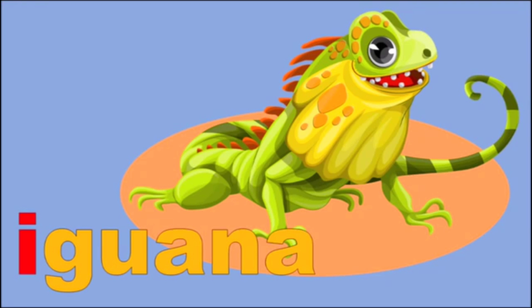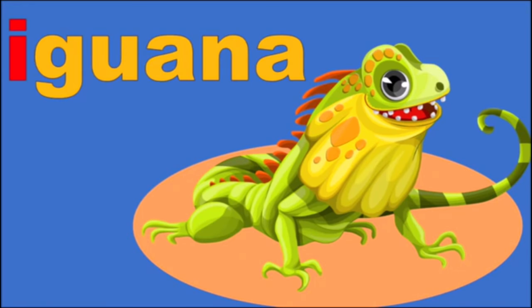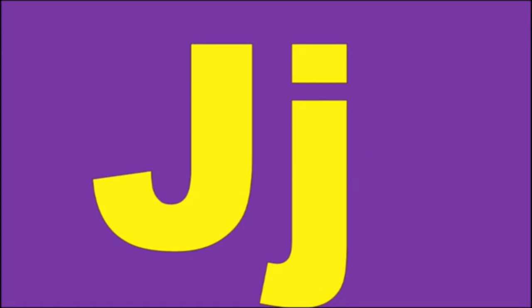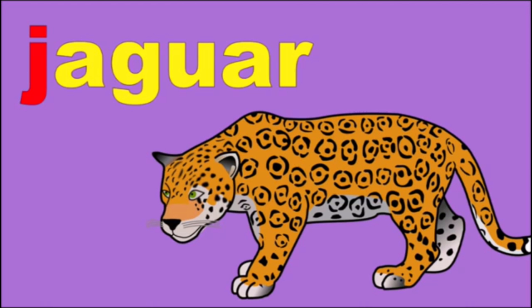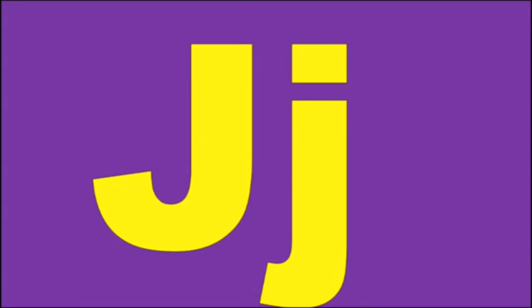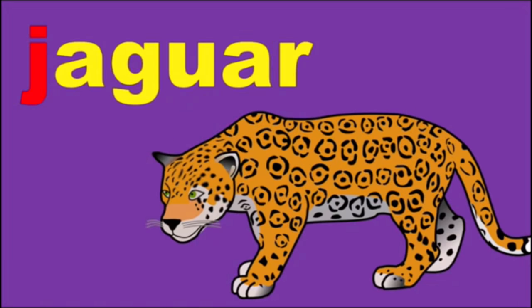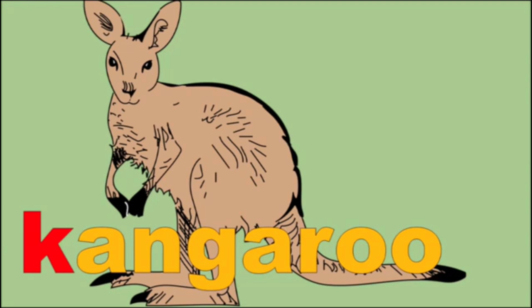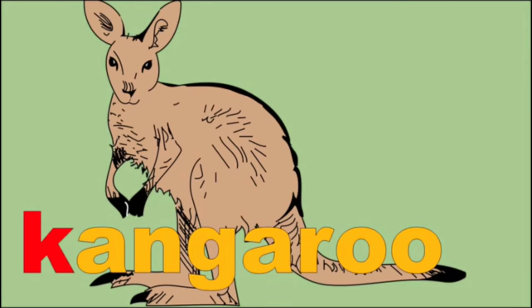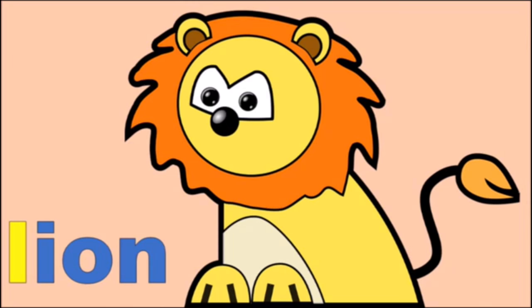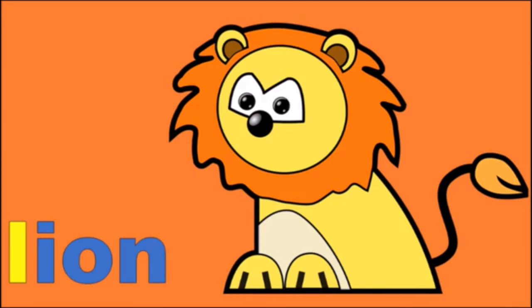I is for Iguana, e. J is for Jaguar, j. K is for Kangaroo, k. L is for Lion, l.